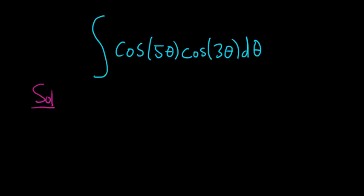To do this problem we have to use an identity. The problem is that here we have a 5 theta and here we have a 3 theta. So these numbers are different. So whenever that happens you want to use the product to sum identity.